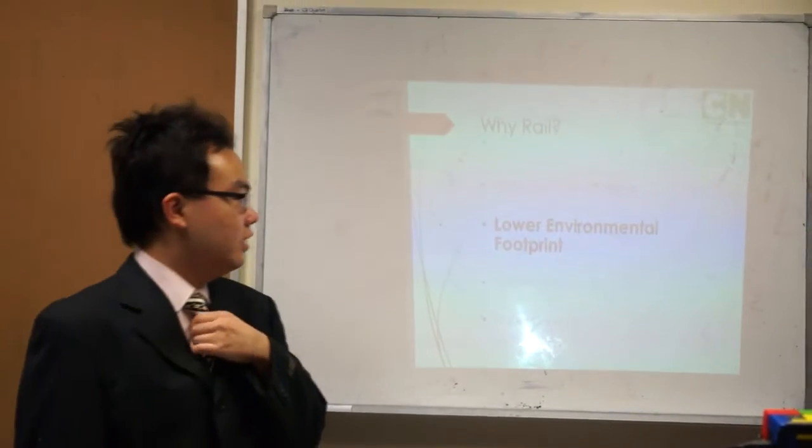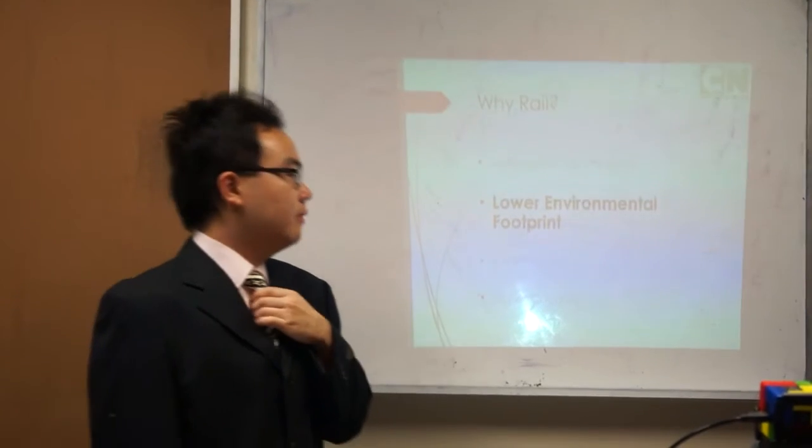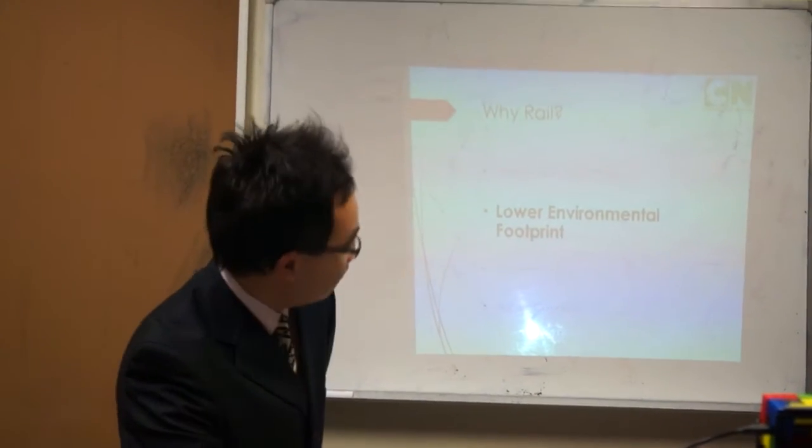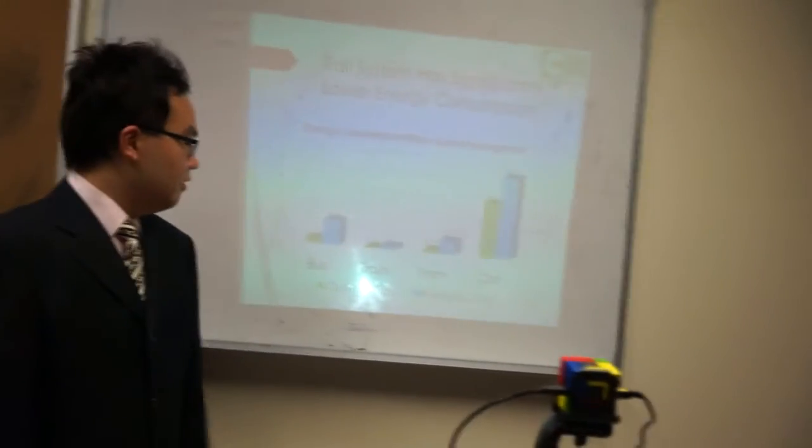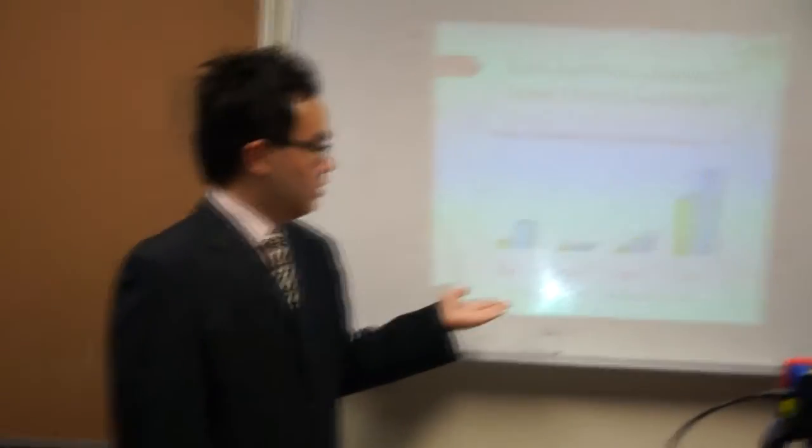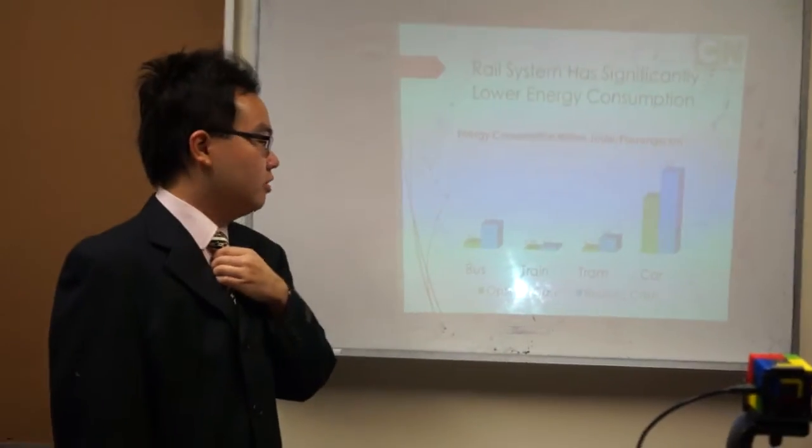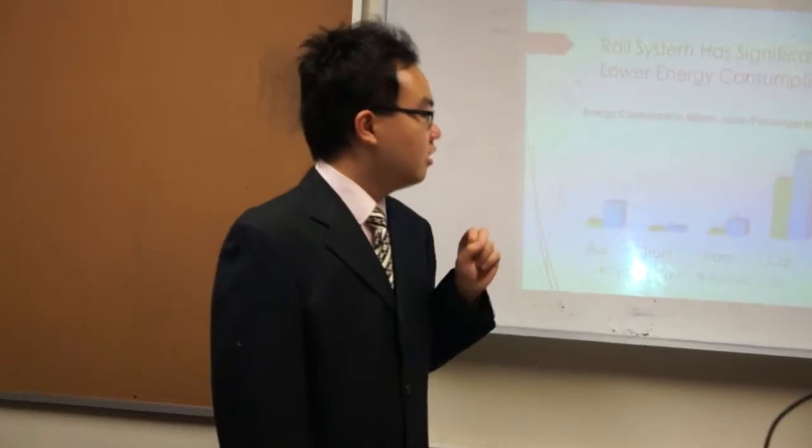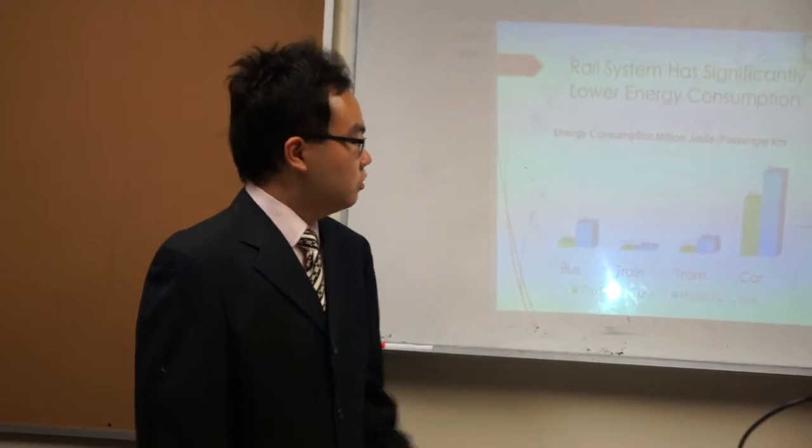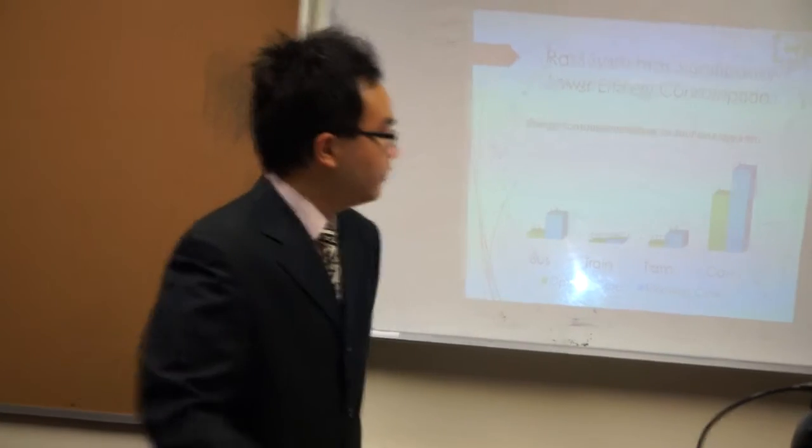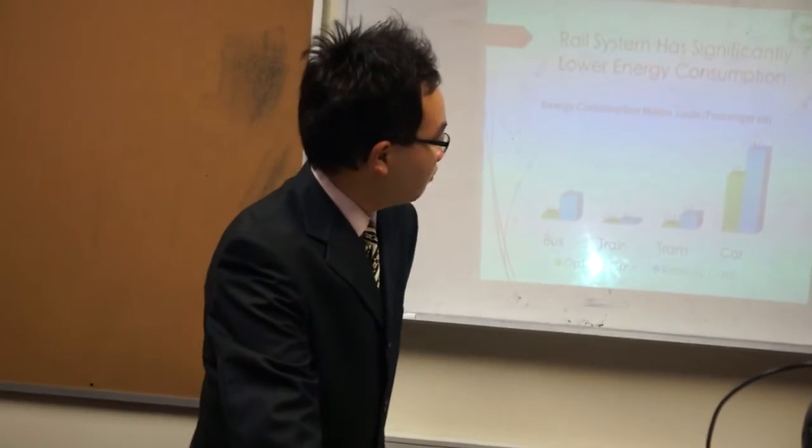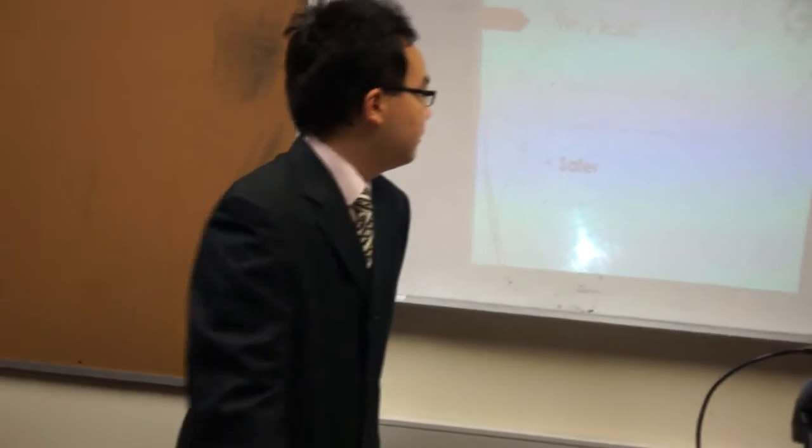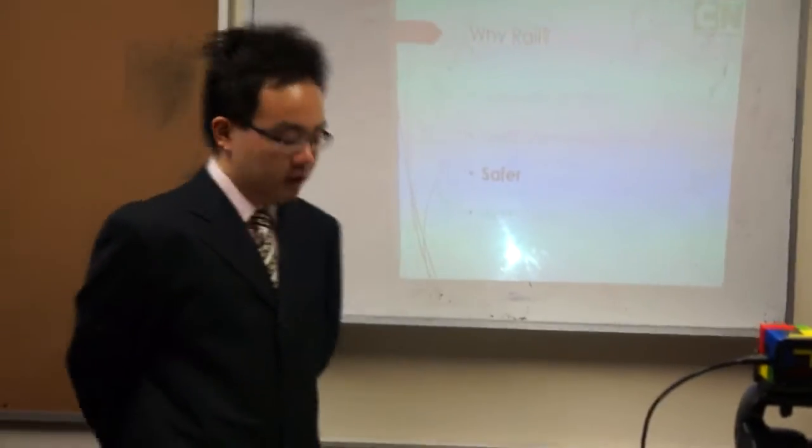The second advantage of rail systems is much lower environmental footprint. As you can see from the slide, trains have much lower energy consumption per passenger kilometer compared to bus, tram, or car by at least a magnitude or more. In the long run, it's much more energy efficient and more sustainable in environmental standards. And the rail system is much safer as well.